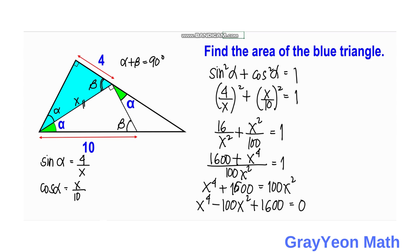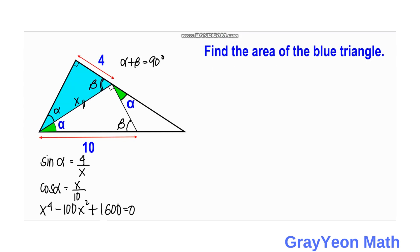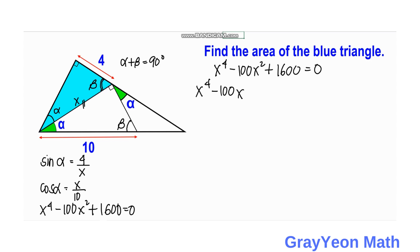We solve the resulting quartic equation: x⁴ minus 100x² plus 1600 equals 0. This quartic resembles a quadratic, so we solve by completing the square. We take x⁴ minus 100x², divide 100 by 2 to get 50, and squaring 50 gives 2500. We add 2500 to both sides to complete the square on the left.